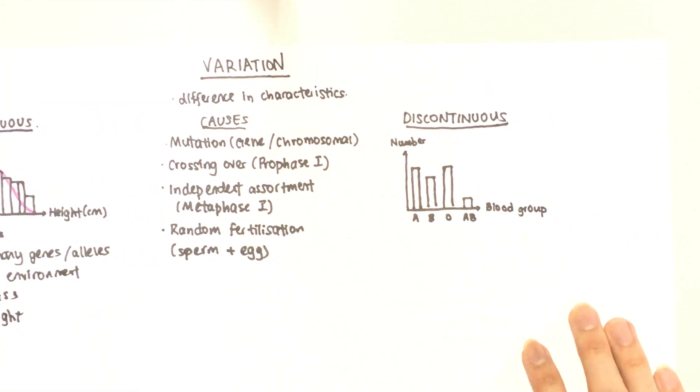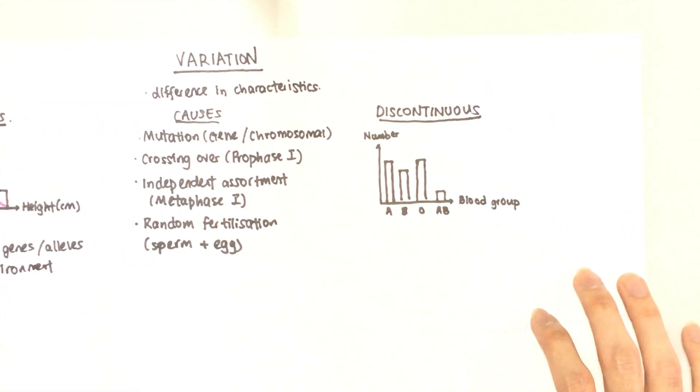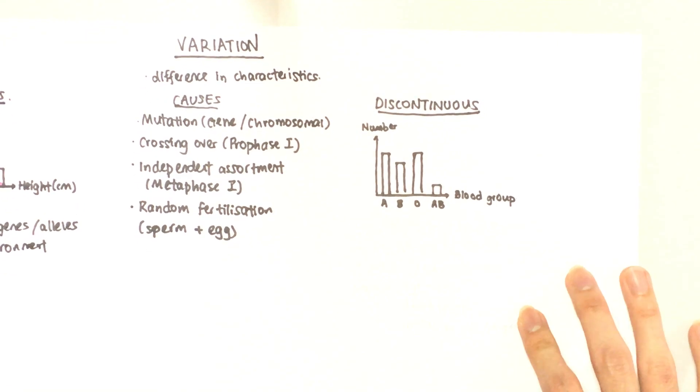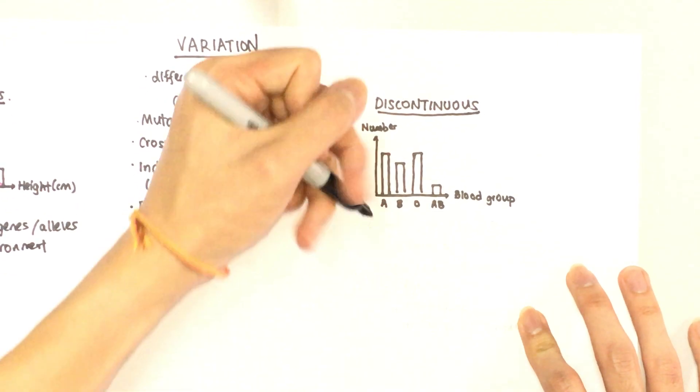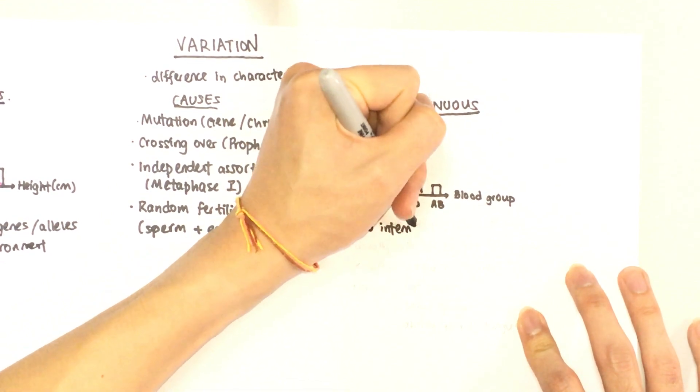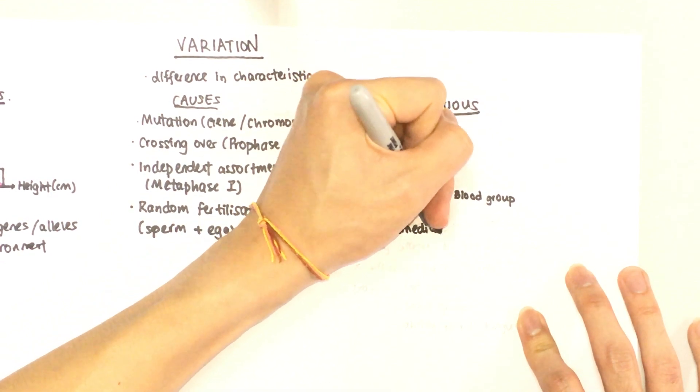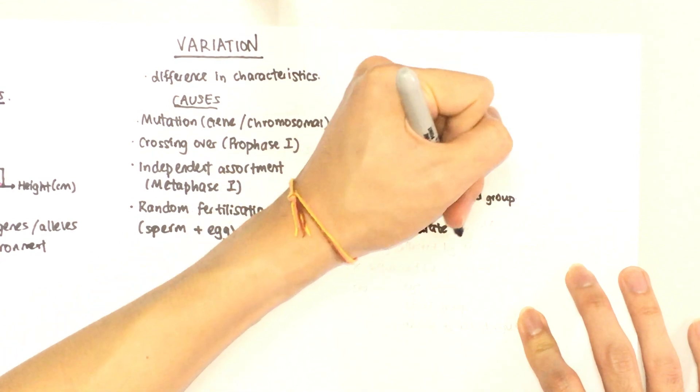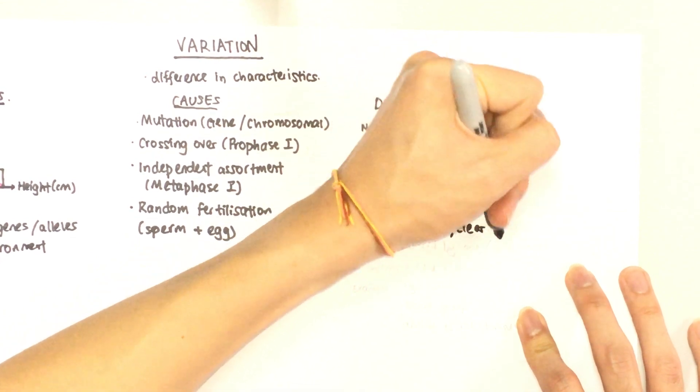Now let's move on to discontinuous variation. In contrast to continuous variation, there's usually no intermediate between the characteristics, which means they show very clear differences.